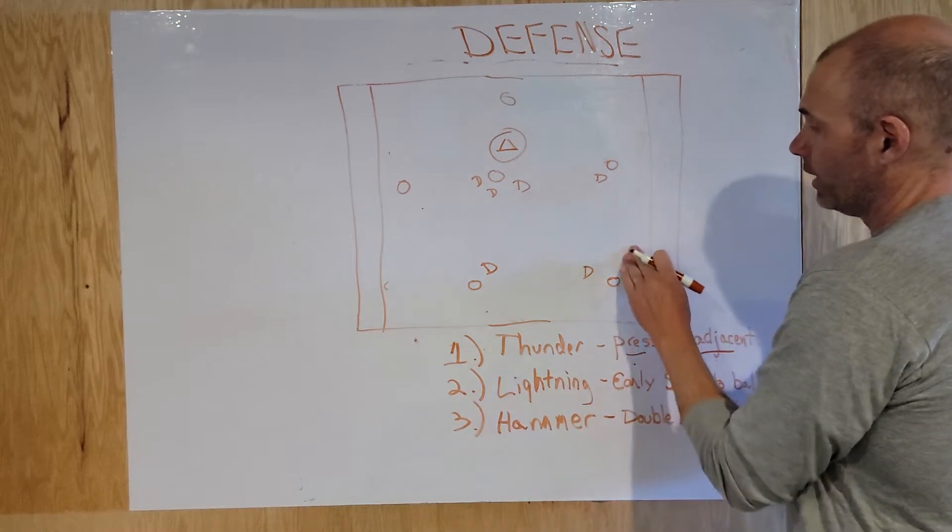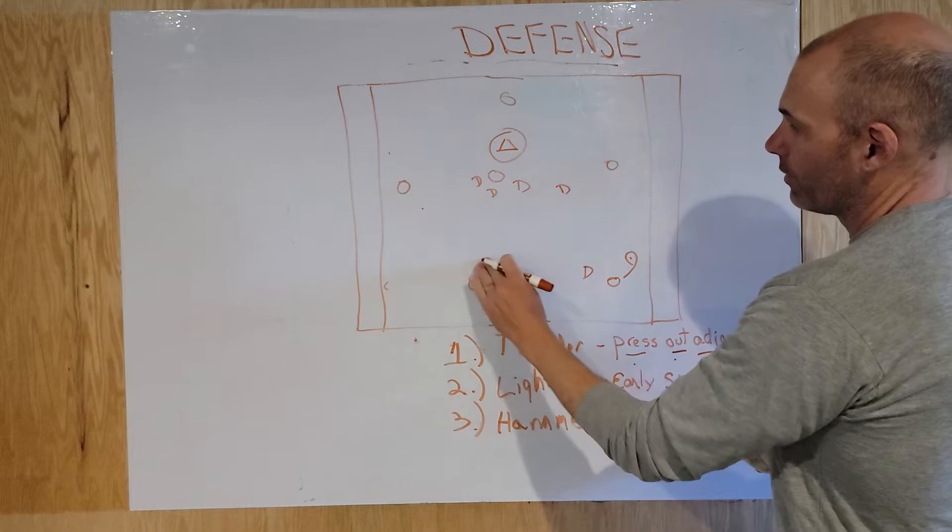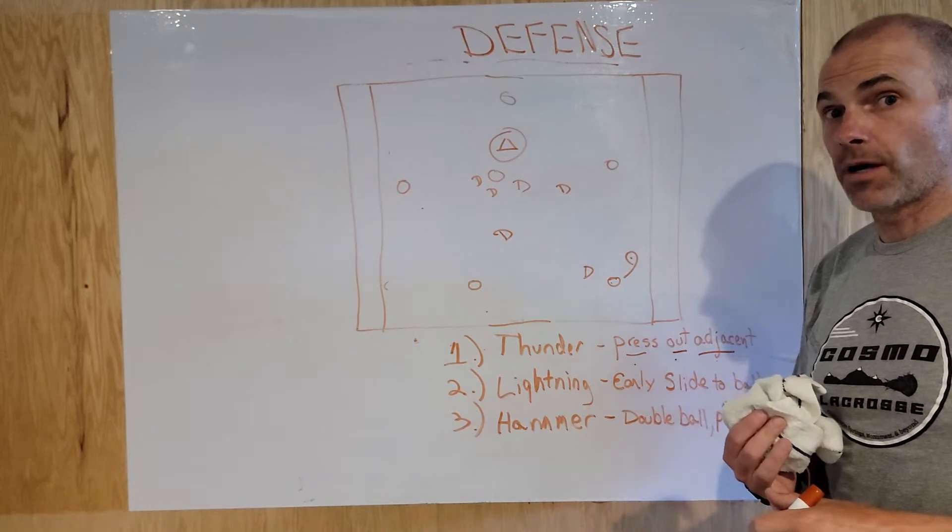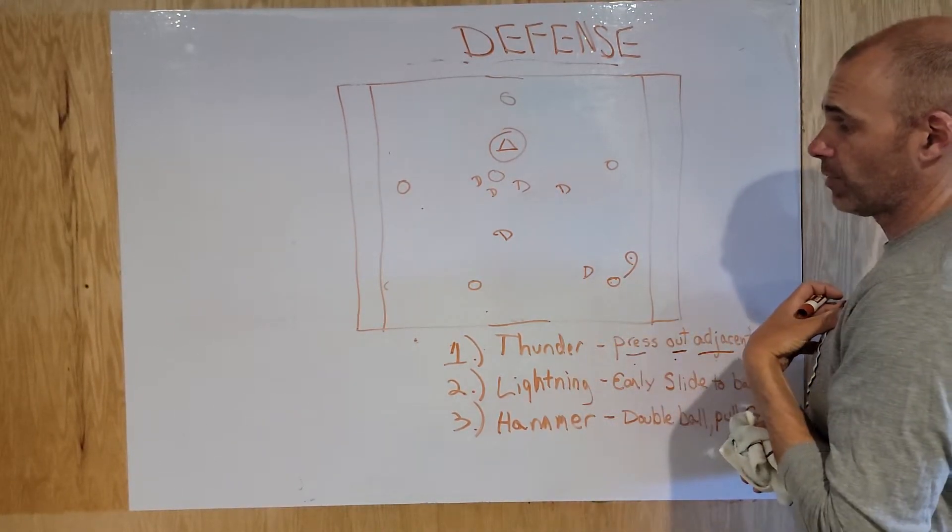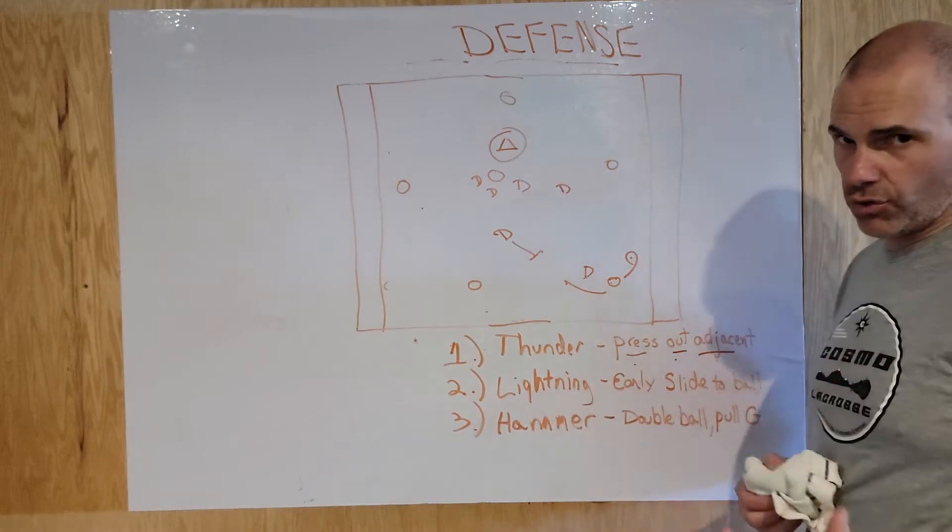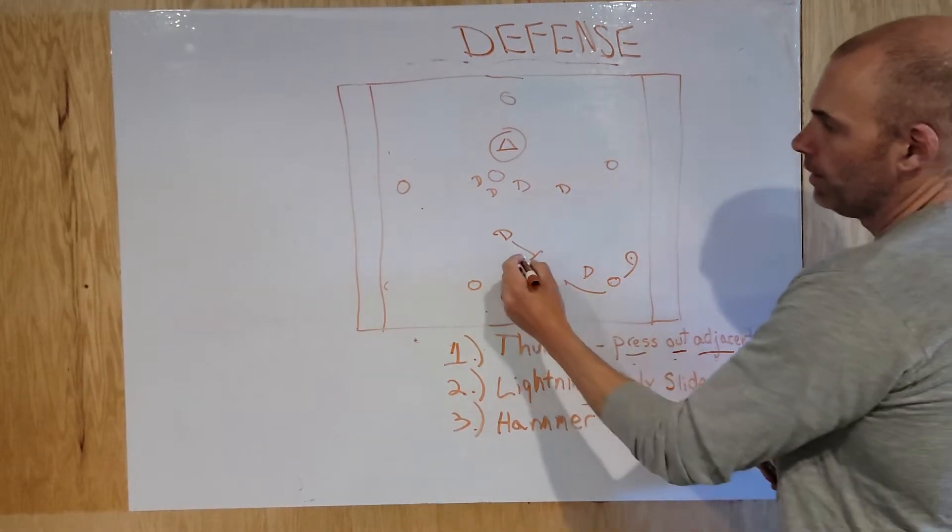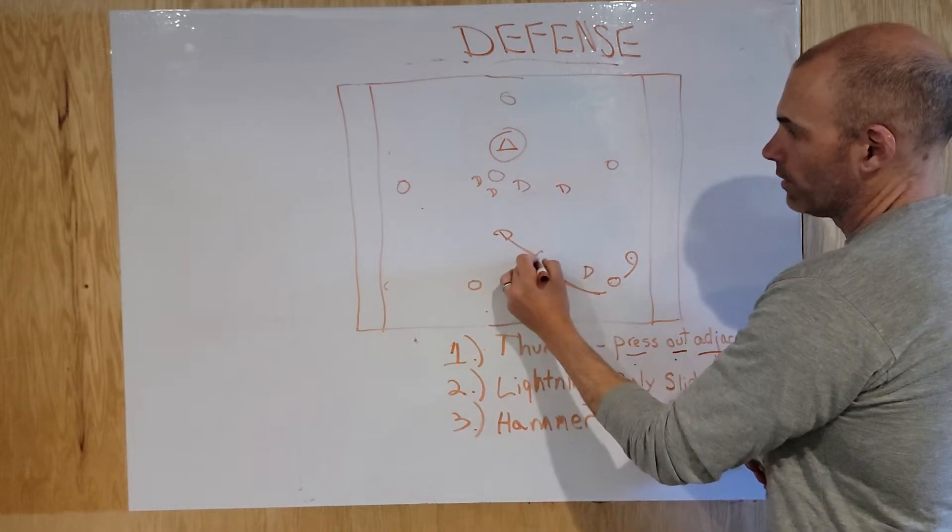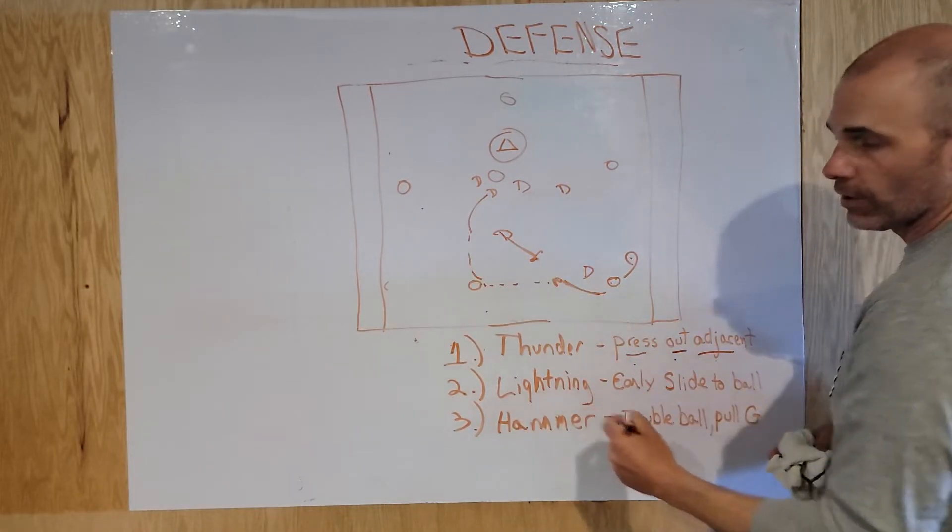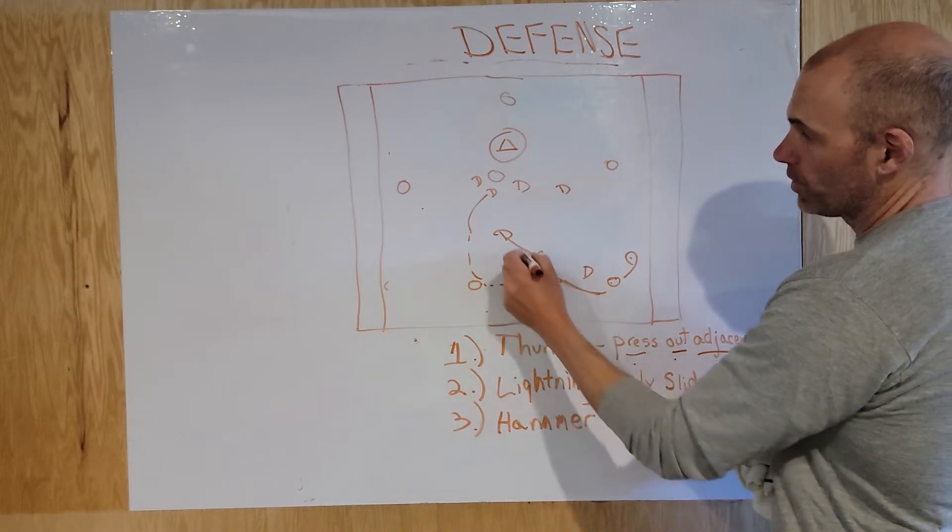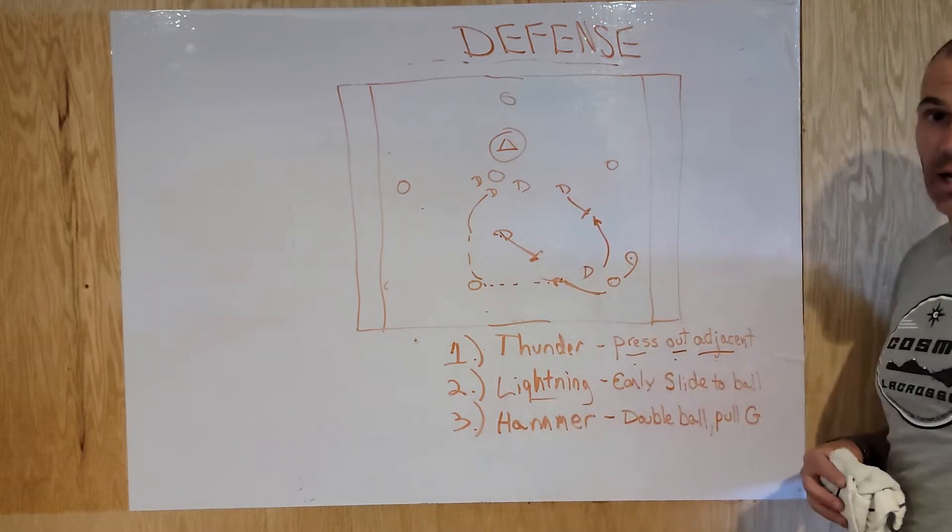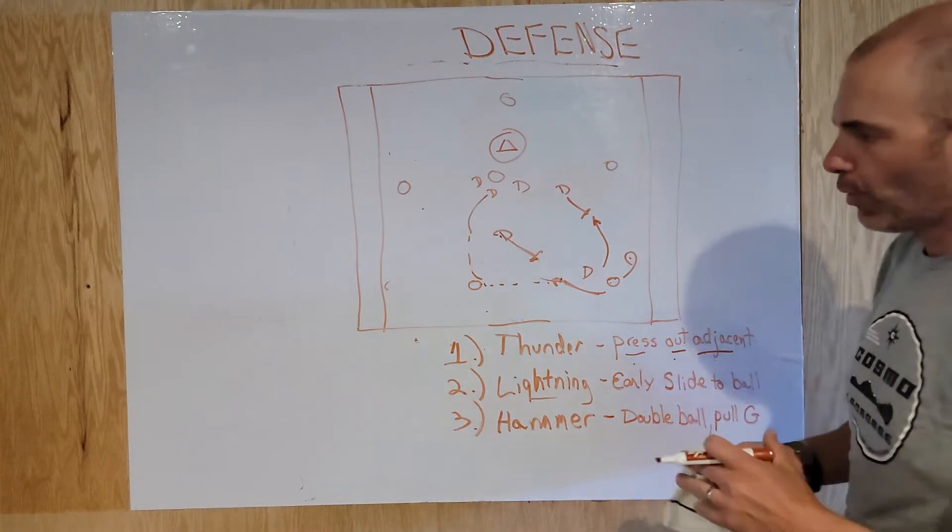Lightning. Lightning is just strictly - that means maybe we're seeing a guy that's really a good dodger and we're having a tough time covering. Long pole, short pole, doesn't matter. So if this guy tries to dodge here, we want to slide early. That means lightning, quick strike. We want to slide early to the ball. So this guy dodges in here, we're going to go right away. We go fast and furious quickly on a lightning call, meaning if this guy goes this way, this defender goes. If he dodges this way, this guy's going to slide quick and fast in a lightning type of slide. Very simple, lightning early slide. We'll practice that.